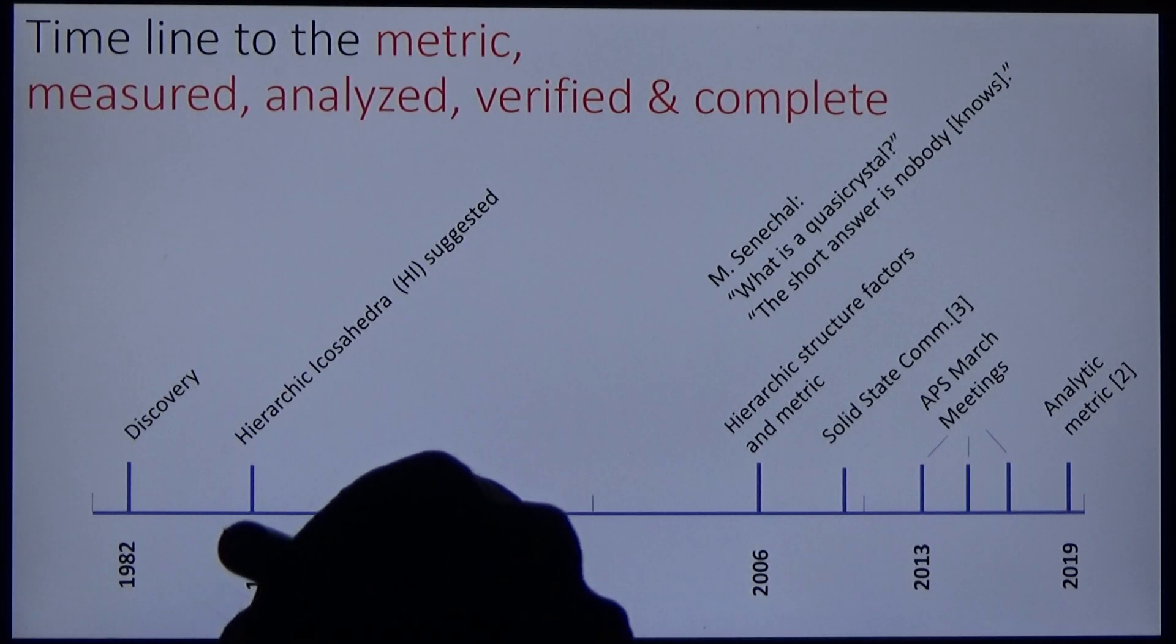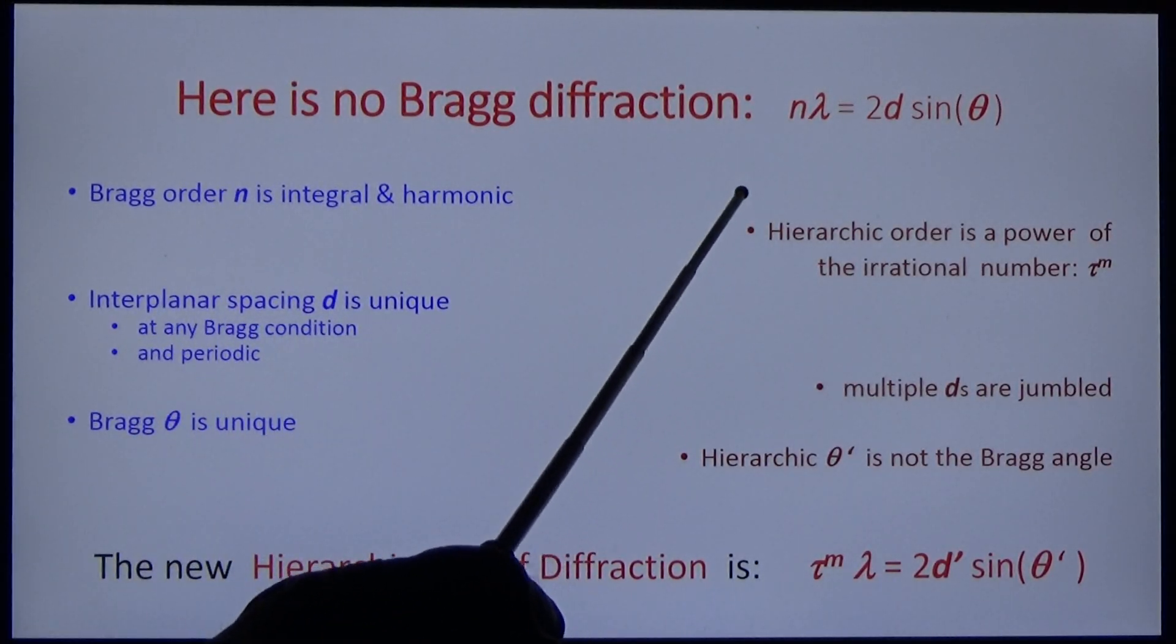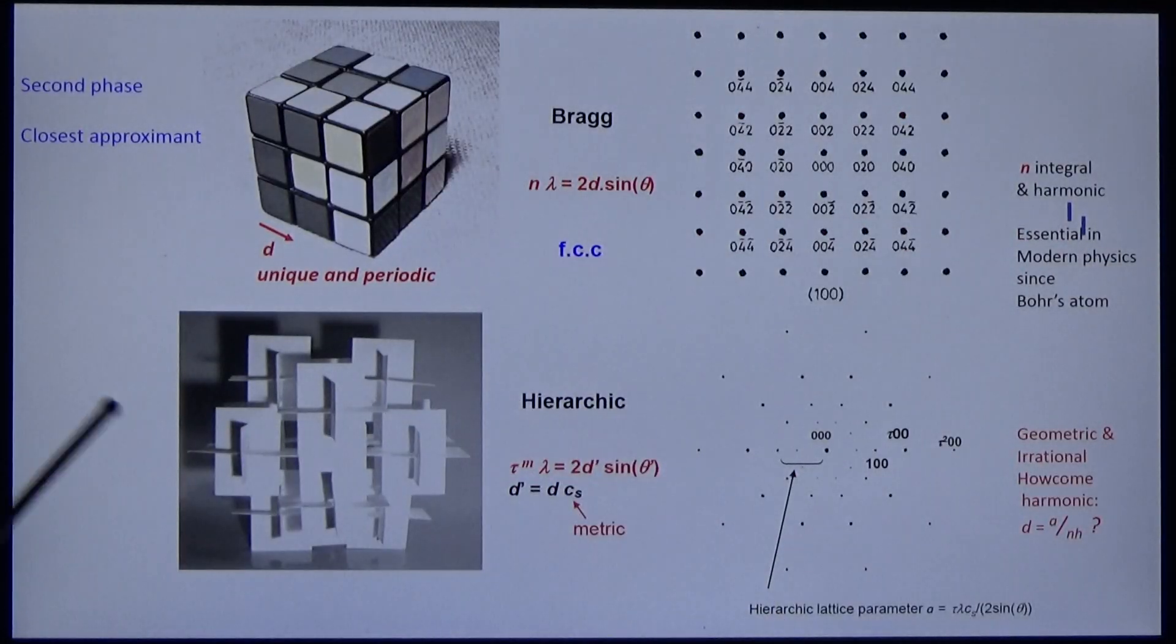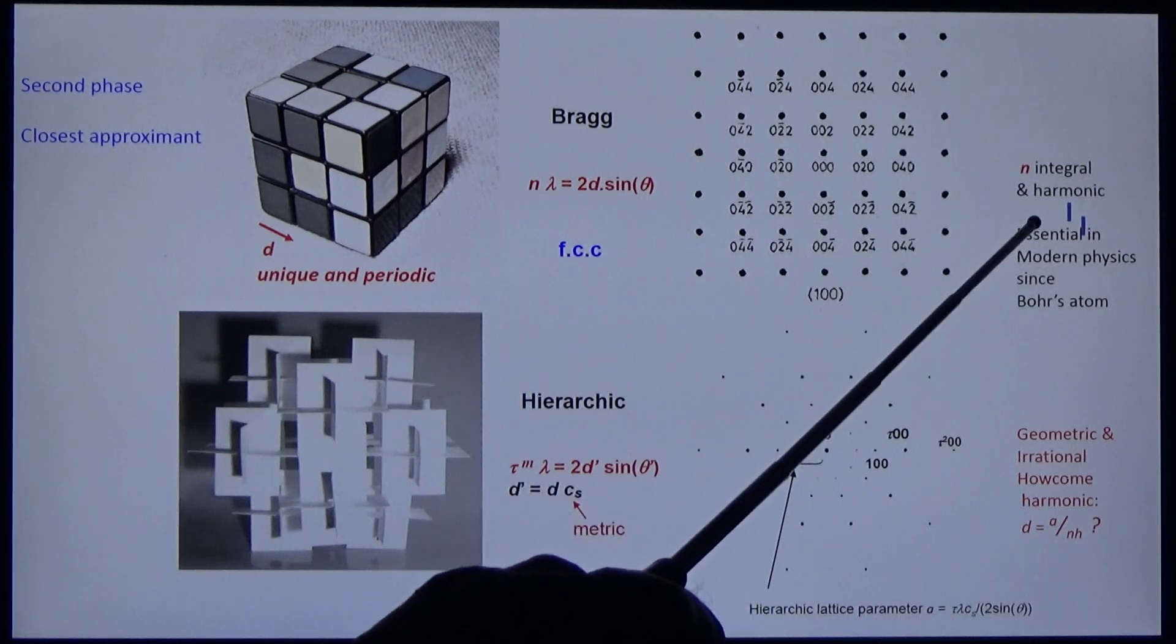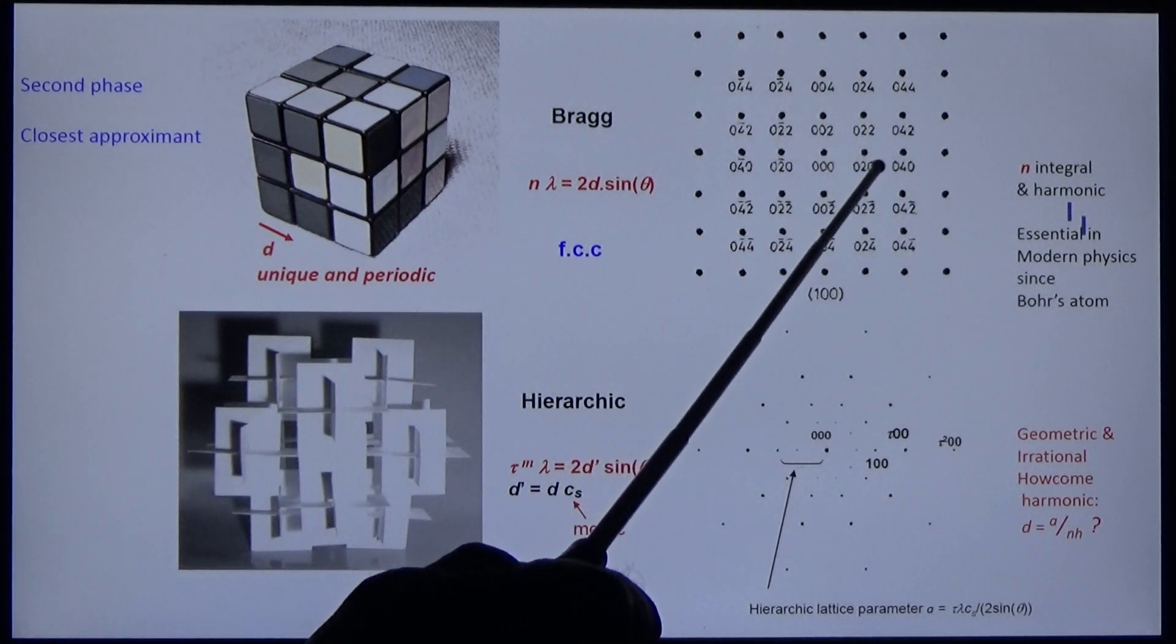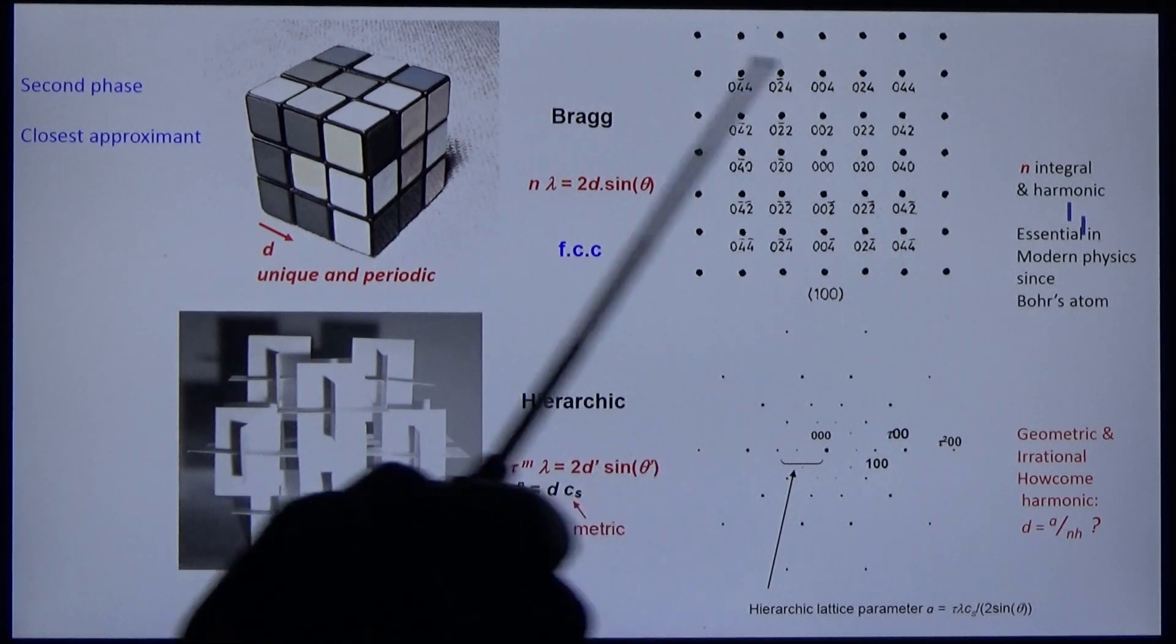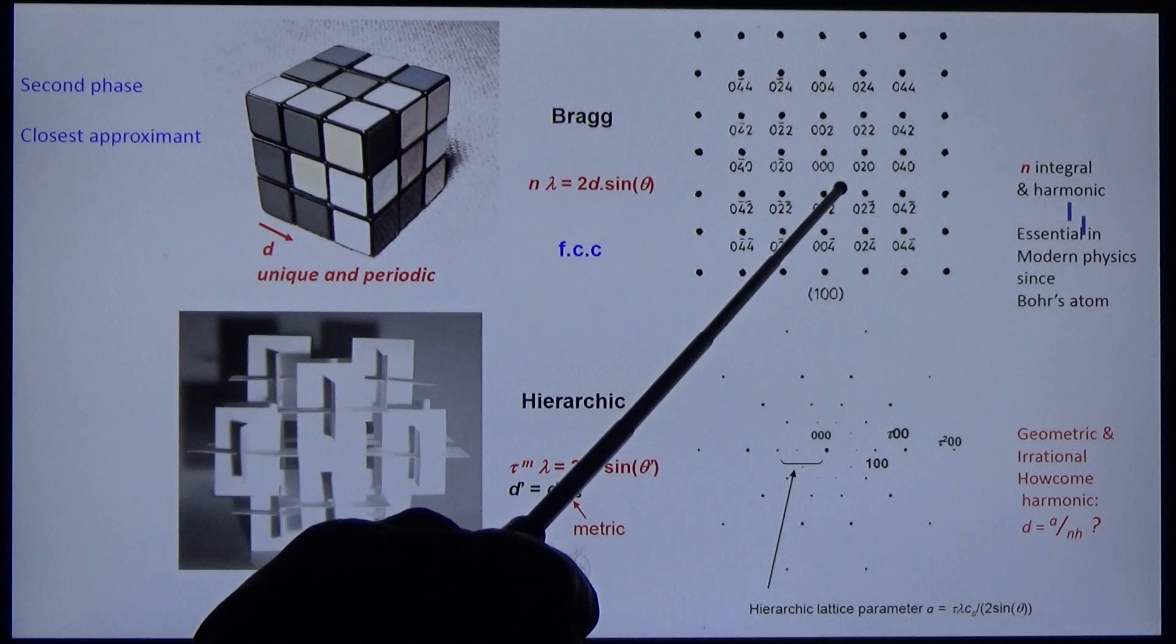The first thing you have to understand is that there is no Bragg diffraction. I will illustrate this in the following slides. In Bragg's law, the order n is integral and harmonic, like 0, 1, 2, 3, 4, 5, 6. In this instance, odd orders are suppressed by the structure factors.